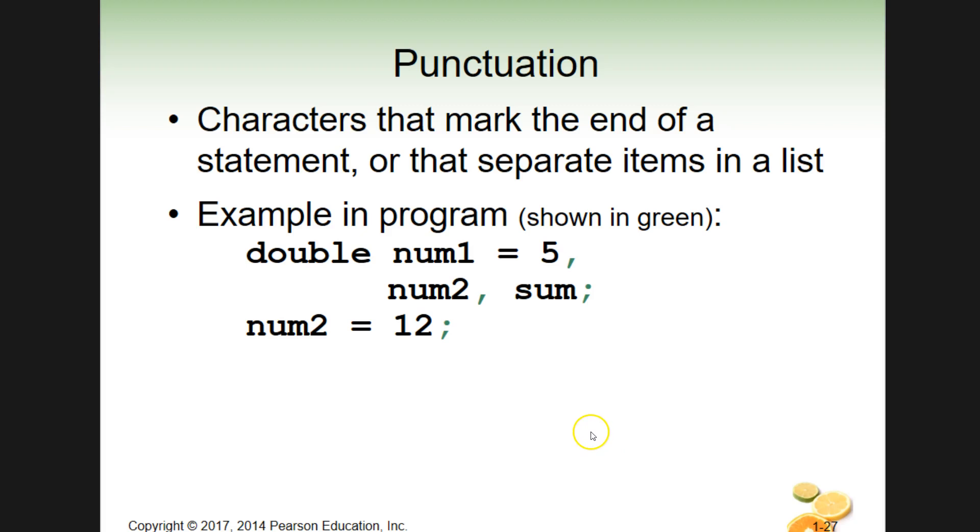We'll look at that later on. But punctuation, semicolons, ending a statement. So this is an entire statement. This is a statement going from double, num1 equals 5, comma, and continuing down here, num2 sum, now the end of that whole statement.